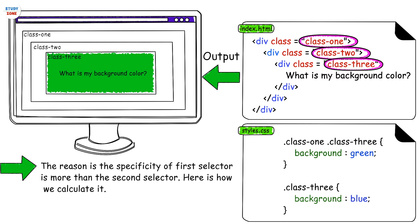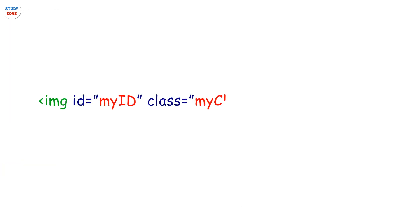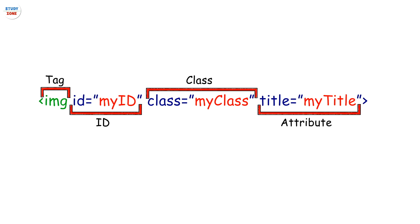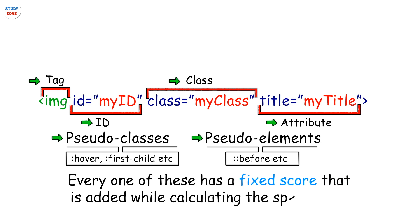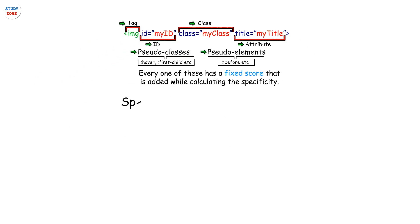The reason is the specificity of the first selector is more than the second selector. Here is how we calculate it. We normally use tags, IDs, classes, attributes, pseudo-classes and pseudo-elements to write a selector. Every one of these has a fixed score that is added while calculating the specificity.